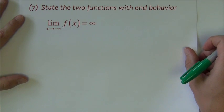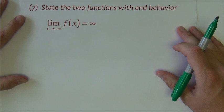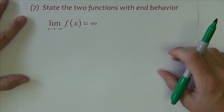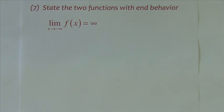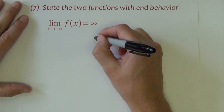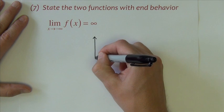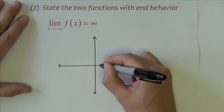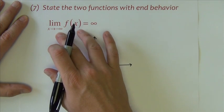Question number seven. Yes, I know I skipped five and six. I threw those out, so those of you following the notes exactly can just skip that slide. State the two functions with end behavior. We haven't talked about end behavior yet, not so much described this way anyway. Let me sketch a graph.